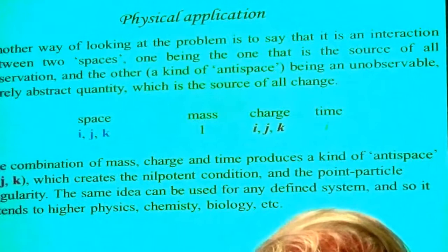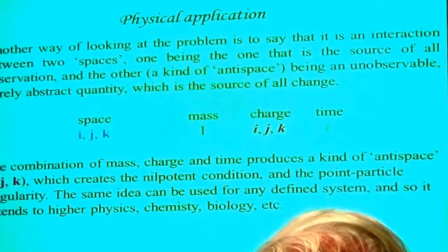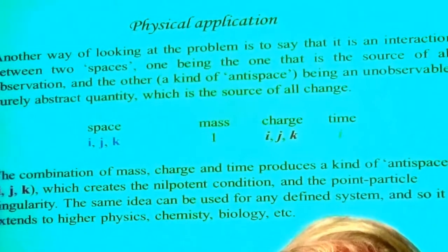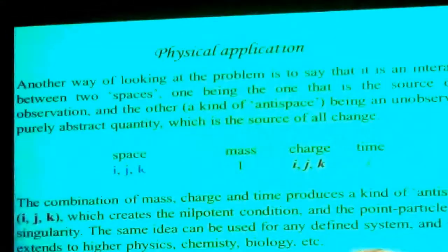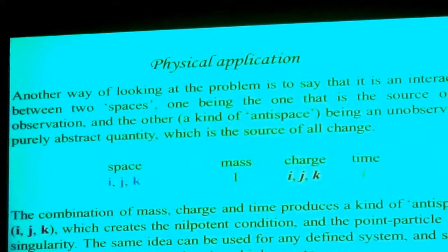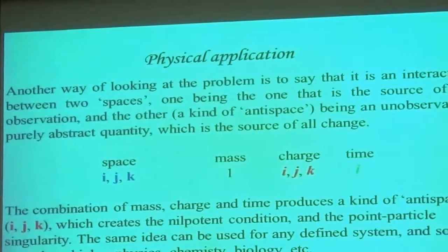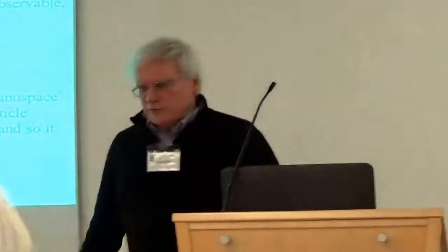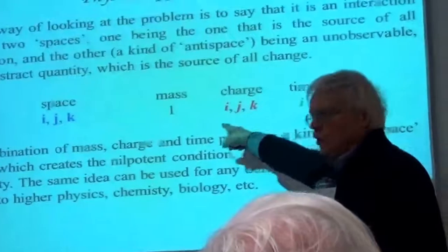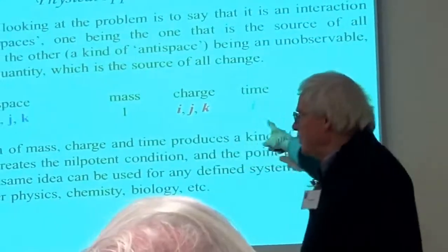Another way to look at the problem is to say it's an interaction between two spaces — this is one thing that will help us connect to biology and other areas. We've got space as we know it, which is the thing we use for measurement and everything. Space is the only thing we can measure — we can't identify anything else except space by measurement. Nothing else can be measured directly; everything is a pointer moving across a scale or something equivalent.